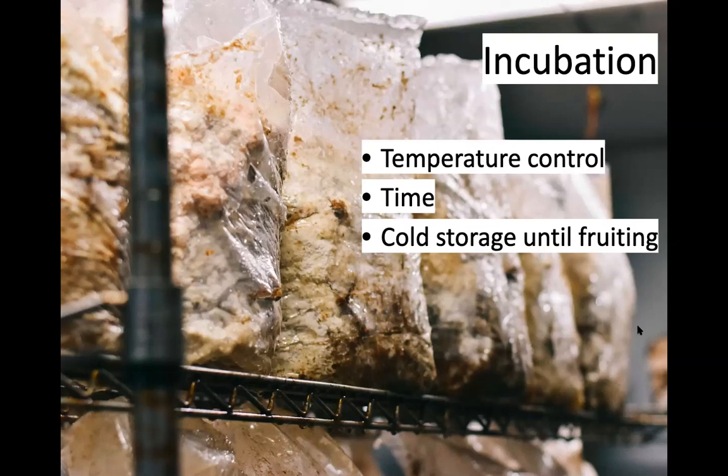Once incubation is complete, bags can be directly moved into the fruiting room or placed in cold storage until you're ready to fruit them. You can build up a surplus of blocks and put them in a walk-in cooler for three or four weeks. After about four weeks they will start fruiting on their own, so one month is the max in cold storage.